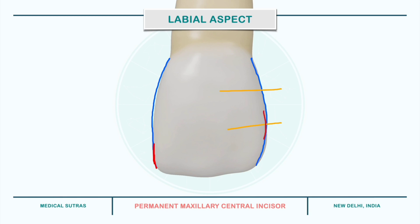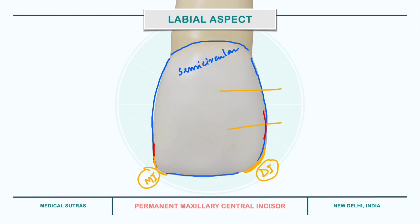Now let's look at the outlines of the crown. The mesial outline is slightly convex, being almost straight, and the crest of curvature is present at the junction of the incisal and middle third. The distoincisal angle is more rounded compared to the mesioincisal angle — this is an important point in determining the sides of the maxillary central incisor. The cervical outline is semicircular in shape with curvature towards the root. The incisal outline is formed by the incisal ridge; it is usually straight and regular, tending to curve downward in a mesiodistal direction.